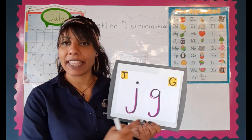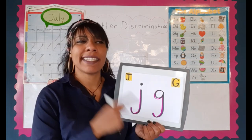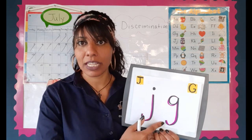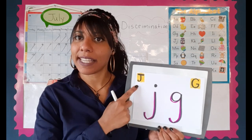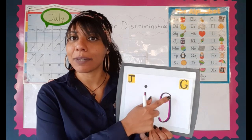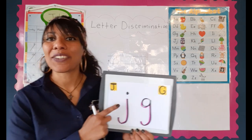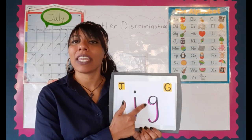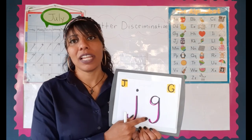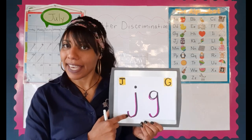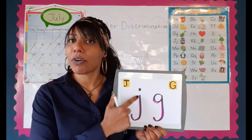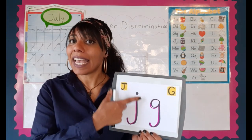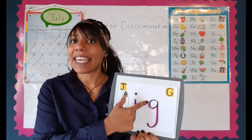Next we have the letters J and G — this is one where we can sometimes get confused because one makes us think of the other. Here we see the capital J and the capital G. J makes me think of the word jumpy and G makes me think of grandma and grandpa. We notice that both are letters with a tail, but the J has a little point on top and the G has a circle.